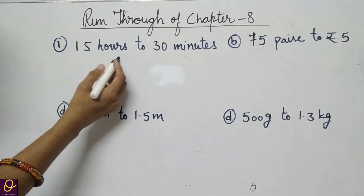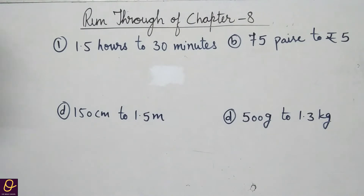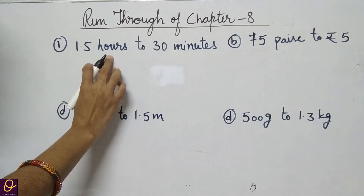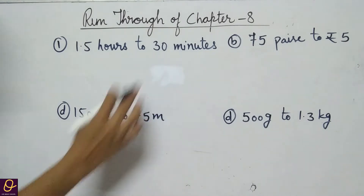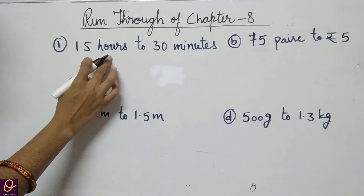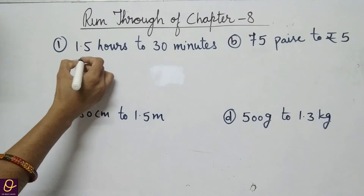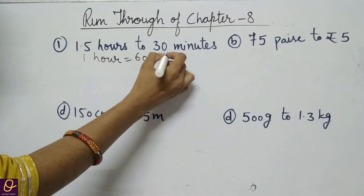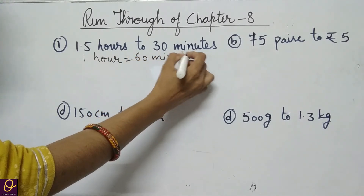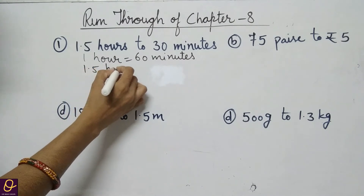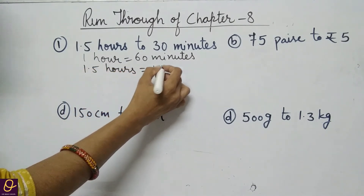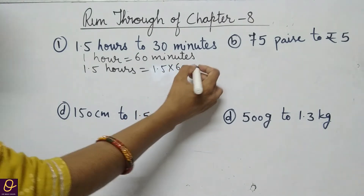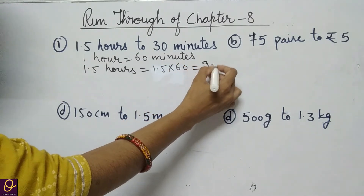1.5 hours to 30 minutes. Whenever we are comparing quantities, the unit should be the same. This one is given in hours and this one in minutes, so we will change hours to minutes. 1 hour equals 60 minutes, so 1.5 hours will be equal to 1.5 into 60, that is equal to 90 minutes.